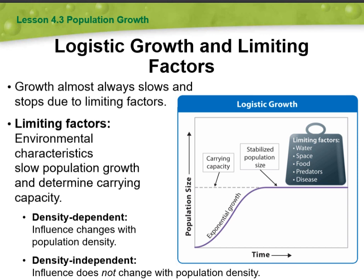Density dependent factors are those that are influenced by the population density, meaning they become more significant as population size increases. These factors include competition for resources, predation, disease, and parasitism. As the population density rises, the impact of these factors can lead to a decrease in population size.